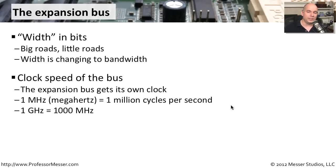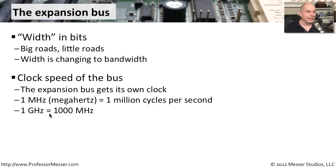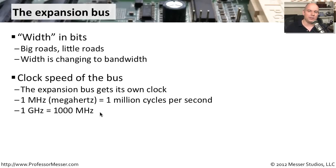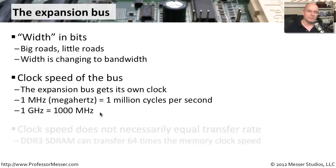A hertz is one cycle per second, therefore a megahertz is a million cycles per second, and a gigahertz is 1,000 megahertz. As we look at these numbers and try to decipher just how fast something is running, we need to understand how fast it's running in hertz so that we can make comparisons to other systems or other computers.